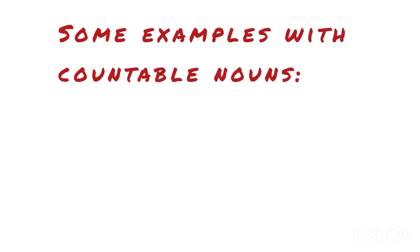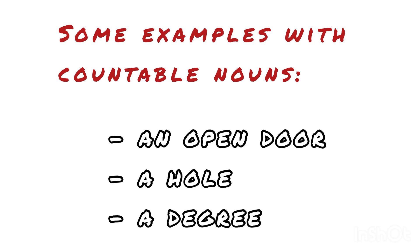Here are some examples with countable nouns: an open door, a hole, a degree.